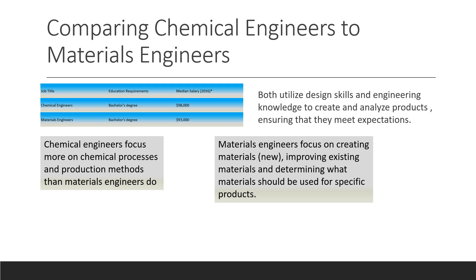Chemical engineers tend to focus more on chemical processes and production methods than materials engineers do, while materials engineers are focused on creating new products and improving existing ones. They also determine what materials should be used for specific products. Both of them utilize design skills and engineering knowledge very well to ensure they meet expectations.